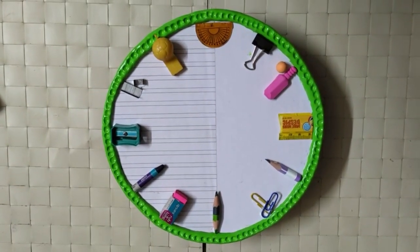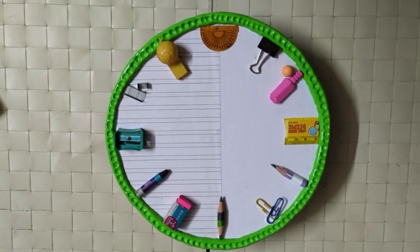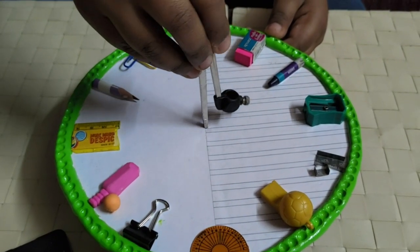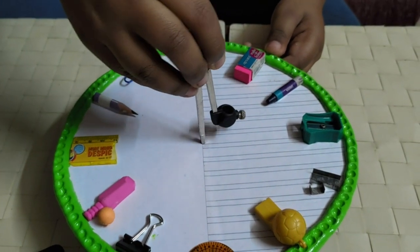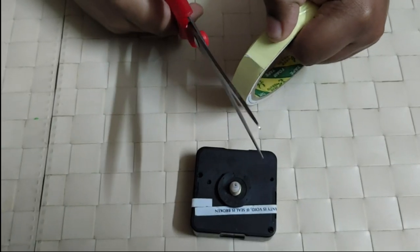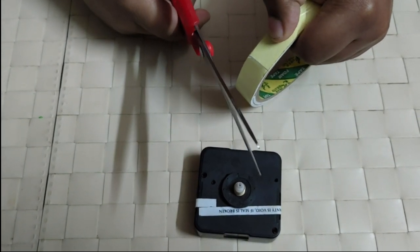I have attached everything. Next I am going to attach the clock pad. I am making a hole in the center using a compass to attach the clock pad. I am going to add double tape to the clock pad so that it holds firmly.